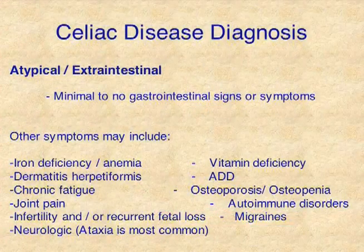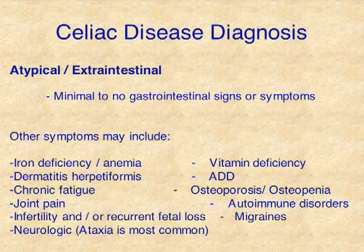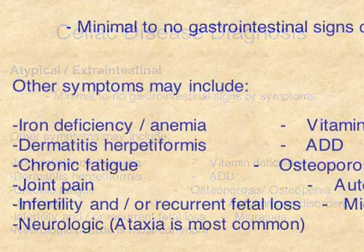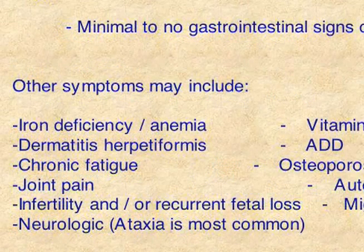The atypical presentation presents a much more complicated picture and a more significant challenge in terms of diagnostics. You can have a patient who presents with iron-deficiency anemia, and we start looking for where the blood loss is occurring, and a percentage of the time when we look at the gut, we'll find that they have celiac disease.